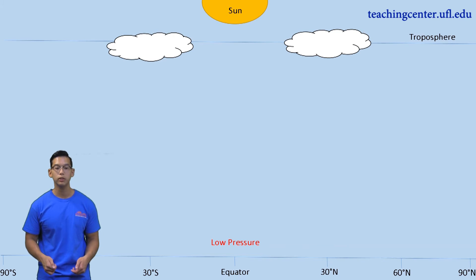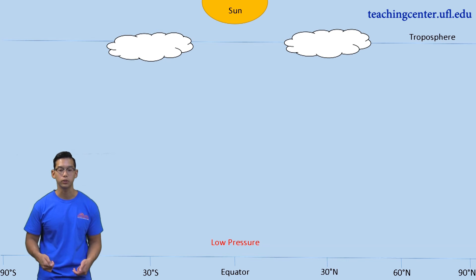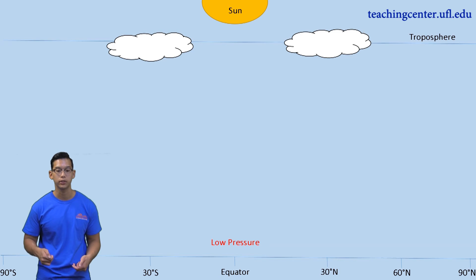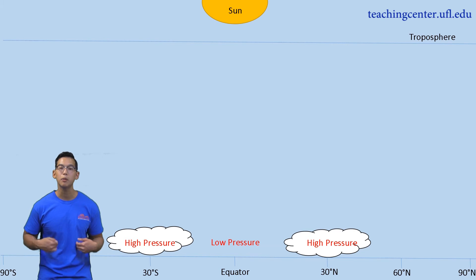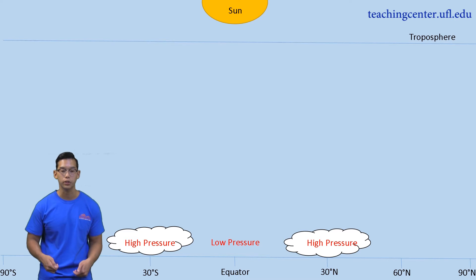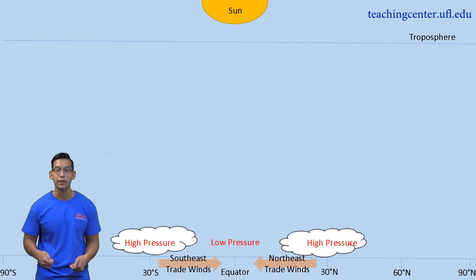Next, as our air molecules continue to move towards the poles, they also begin to cool down. Remember how we discussed that cool air molecules are more dense than warm air molecules? Well, at around 30 degrees latitude, our air molecules will begin to sink downwards. This area now has an increased number of air molecules since additional air molecules have accumulated in this location. As a result, this area is now an area of high pressure. Air molecules like to naturally flow from an area of high pressure to an area of low pressure, and as such, our air molecules will move from 30 degrees latitude and return back to the equator, replacing the air molecules that were initially lost at that location.